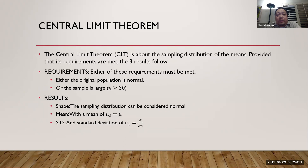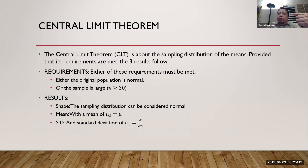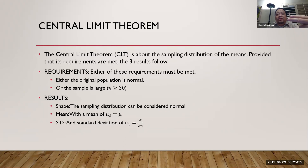CLT is different from binomial requirements. For binomial, all requirements must be met — if any one fails, you don't have binomial. For CLT there are two requirements and it's either/or: if you have one of them, you're good. You don't need both. So either the original population is normal, or the sample is large. Once you have the requirements, CLT tells you things about the shape of the sampling distribution — it says the sampling distribution is normally distributed.